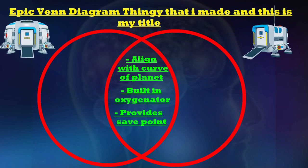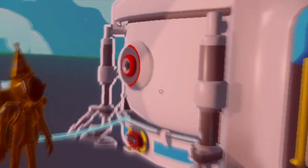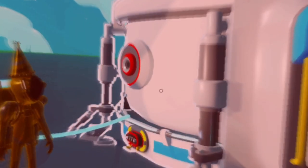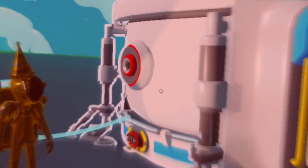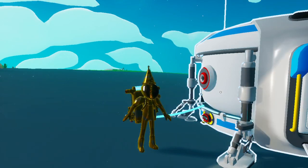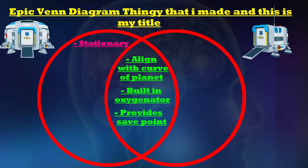Now that we've reviewed everything these two have in common, it's time to move on to the shelter and mention things that are specific to it. The first thing about the shelter that is different from the field shelter is that it is completely stationary — you cannot move it no matter what you do. This thing also has two single storage spots and four connection plugs.